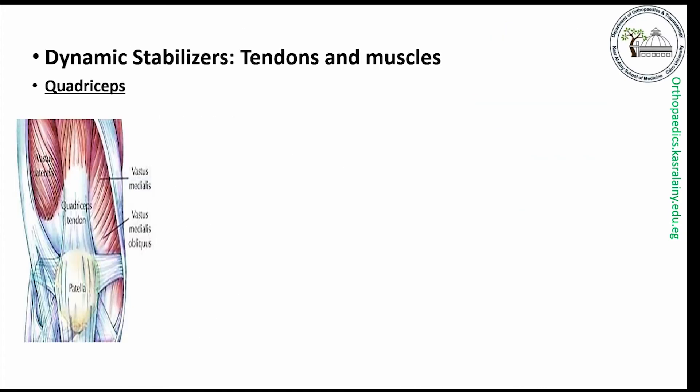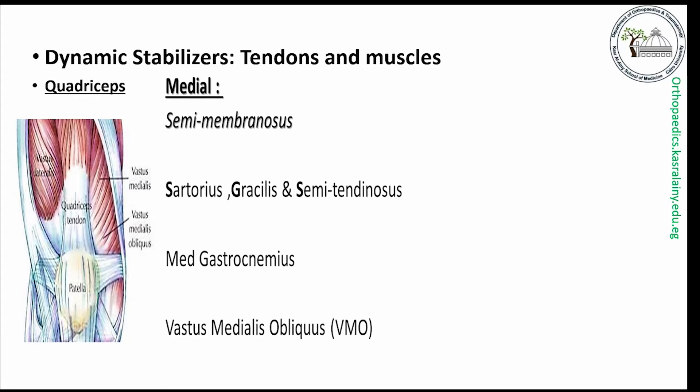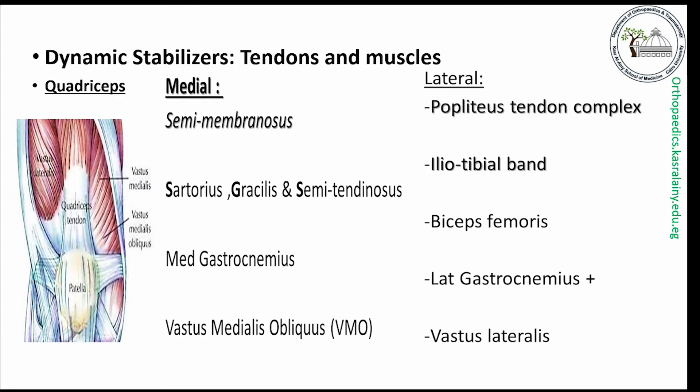Dynamic stabilizers of the knee include the tendons and muscles: the quadriceps and its four parts; on the medial side, the semimembranosus muscle and other muscles; and on the lateral side, the popliteal tendon complex, the iliotibial tract, and others.